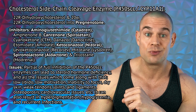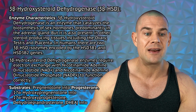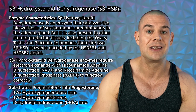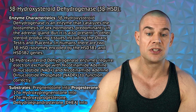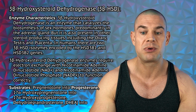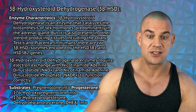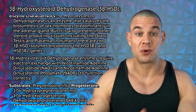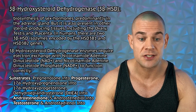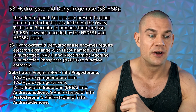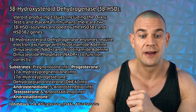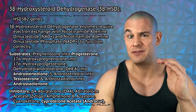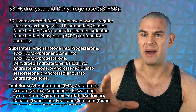Moving over to the 3-beta-hydroxysteroid dehydrogenase enzymes, which catalyze the biosynthesis of sex hormones predominantly in the adrenal glands, but also present in other steroid-producing tissues including the ovaries, testes, and even the placenta. In humans there are two variants — type 1 and type 2. This enzyme is responsible for several steps in the sex hormone cascade, including pregnenolone into progesterone, DHEA into androstenedione, 5-alpha-androstenedione into testosterone, and androstenedione into androstenedione. When you start inhibiting these enzymes, masculinity levels drop significantly.